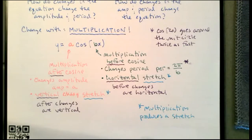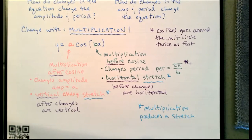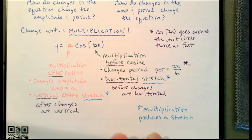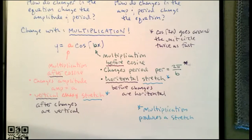So those are the key things to notice: multiplication produces a stretch; multiplication before makes a horizontal stretch; multiplication after makes a vertical stretch. The next topic will be changing our multiplication to addition — addition before the function and addition after the function — and we'll figure out what addition produces in the graph, since before will be horizontal and after will be vertical.